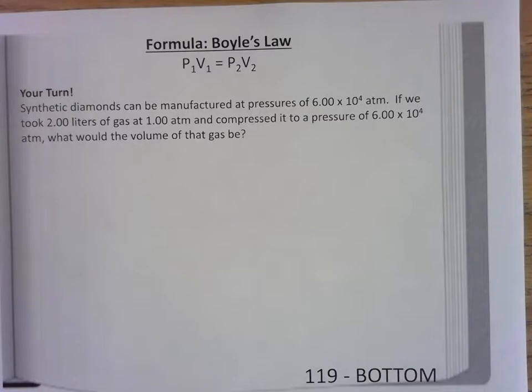So in this problem it says synthetic diamonds can be manufactured at pressures of 6.00 times 10 to the 4th atmospheres. If we took 2 liters of gas at 1 atmosphere and compressed it to a pressure of 6.00 times 10 to the 4th atmospheres, what would the volume of the gas be?